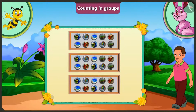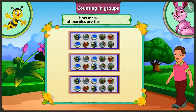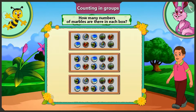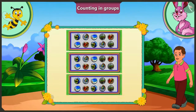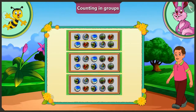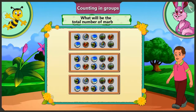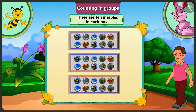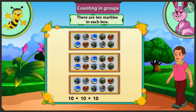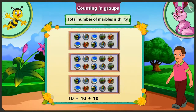Come on honey, now you tell me how many marbles are there in each box? There are 5 and 5, 10 marbles in each box. Now try to guess how many marbles are there in total? Each box has 10 marbles, and if there are 3 such boxes, the total number of marbles is 30.